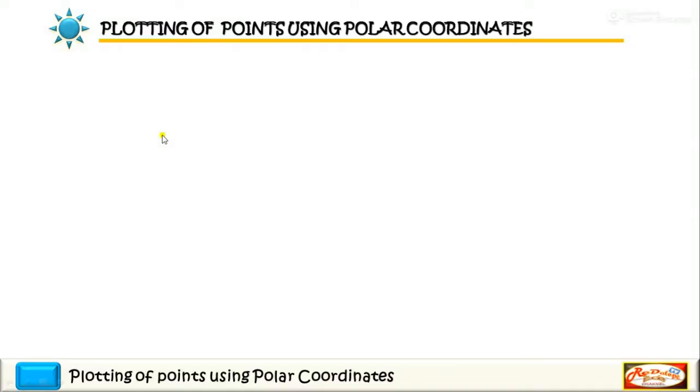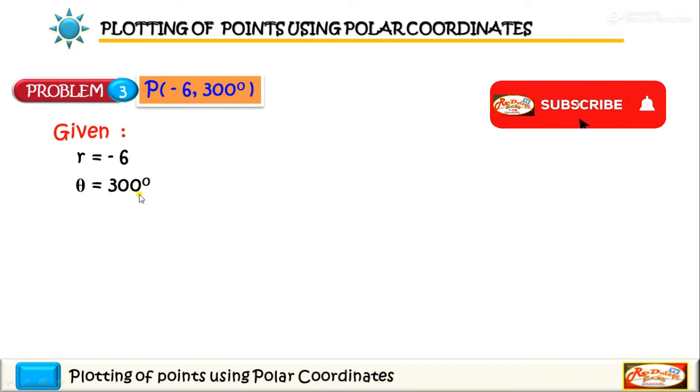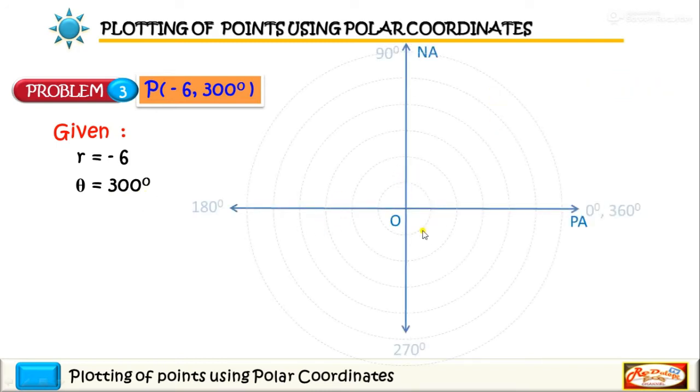Okay, we have the point P. So we have the given coordinates. R is equal to negative 6 and the polar angle is equal to 300 degrees. So indicating the given again, we have R equals negative 6 and theta, the polar angle, equals 300 degrees. So we have here the normal and the polar axis.